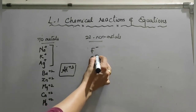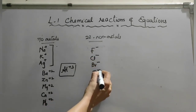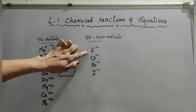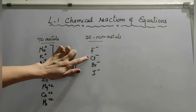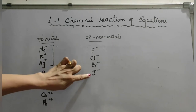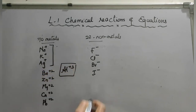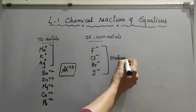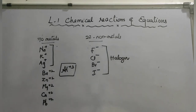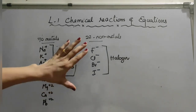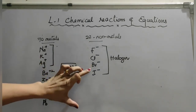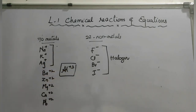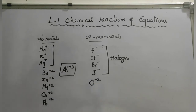The minus one non-metals are fluorine, chlorine, bromine, and iodine. They accept one electron and show minus one, so they are called fluoride ion, chloride ion, bromide ion, and iodide ion. Fluorine, chlorine, bromine, and iodine belong to the halogen family and are called halogens. For minus two, there is only one non-metal: oxygen.